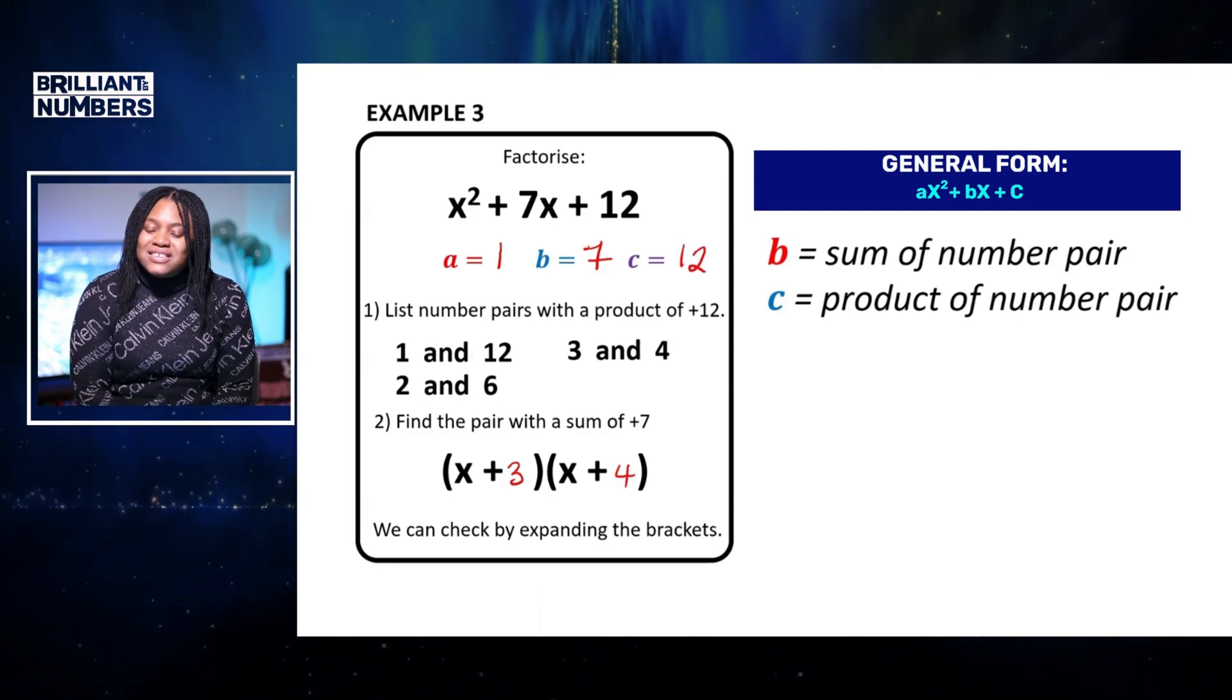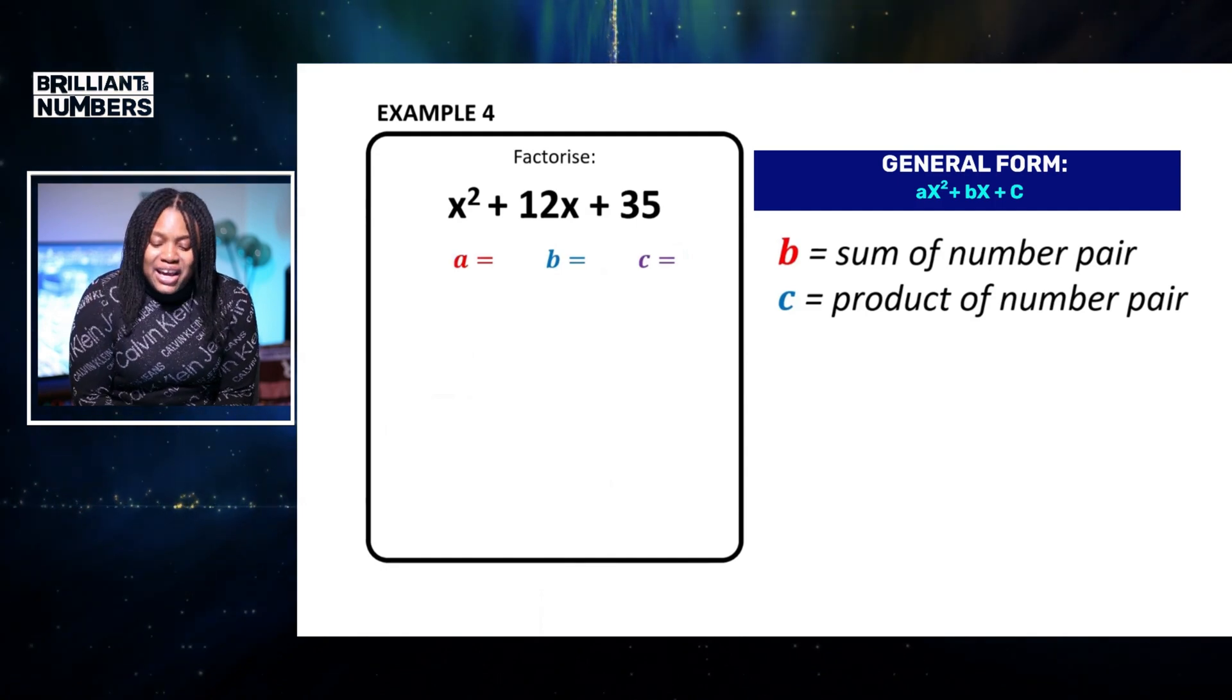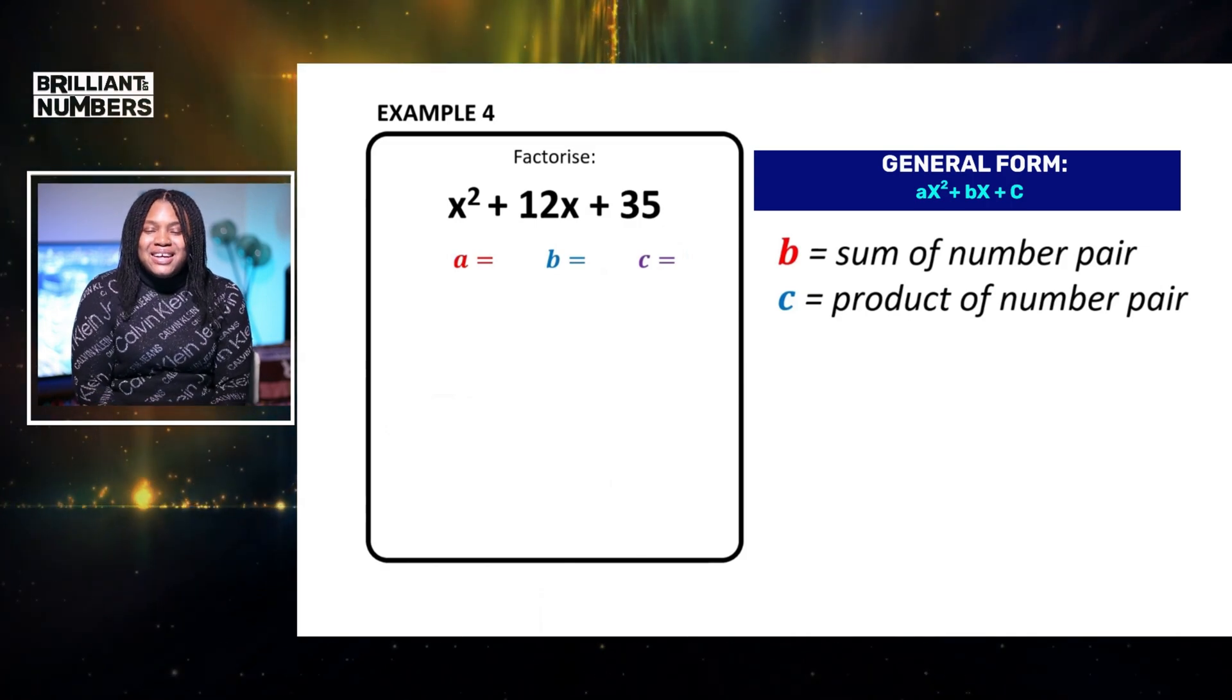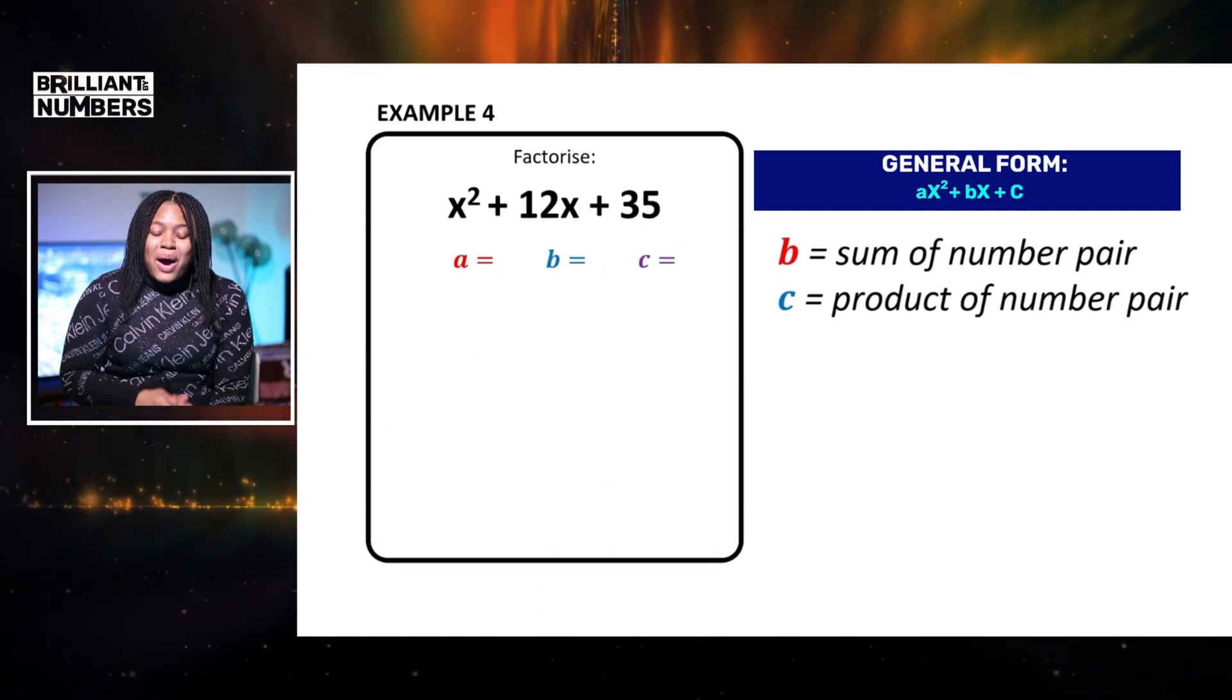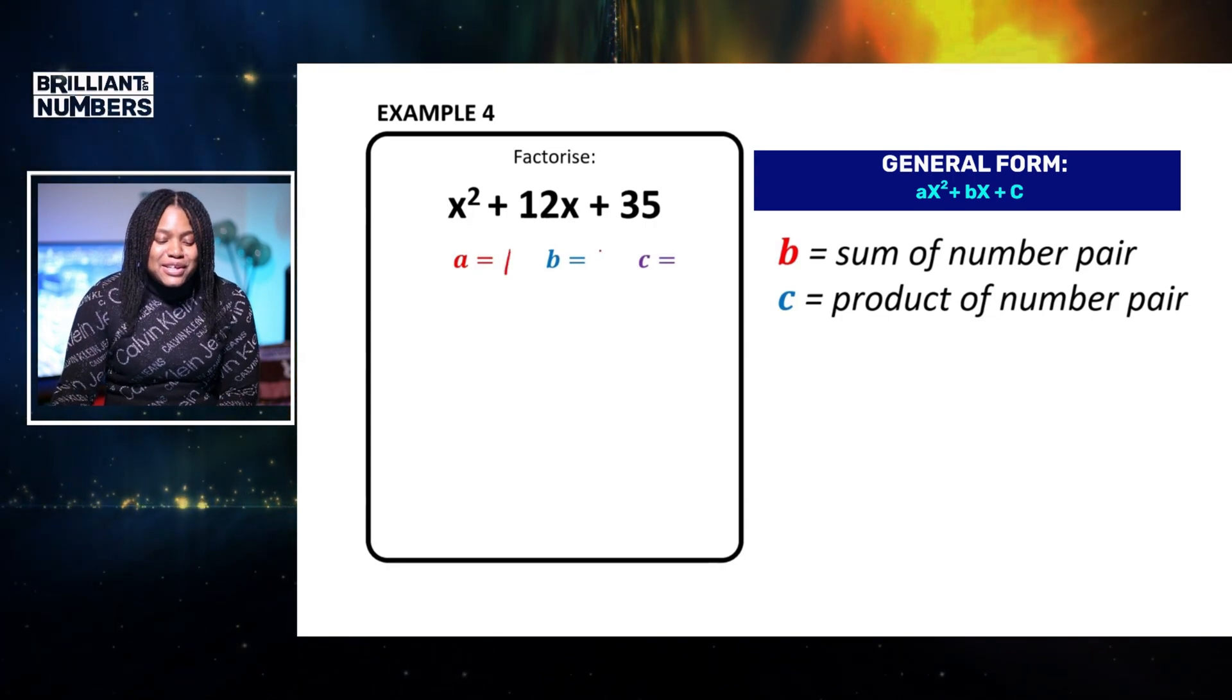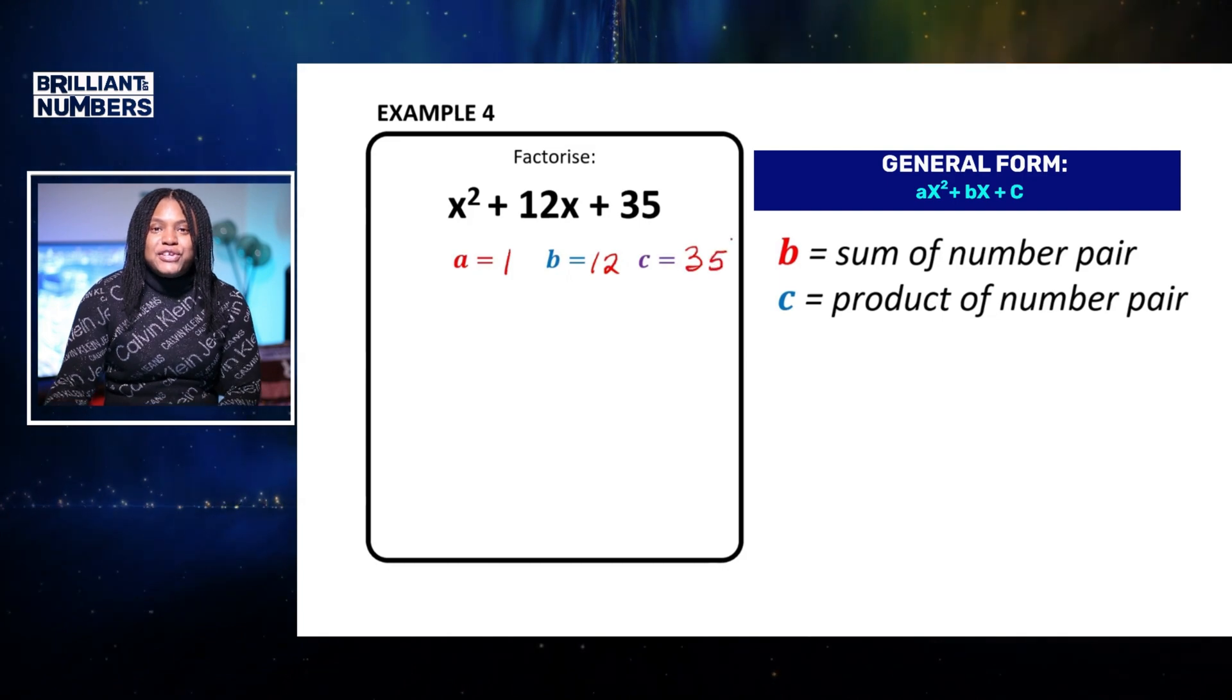So we're asked here to factorize x squared plus 12x plus 35. You know the steps by now. So we're going to write down a, b, and c. So a is equal to 1, b is equal to 12, and c is equal to 35.